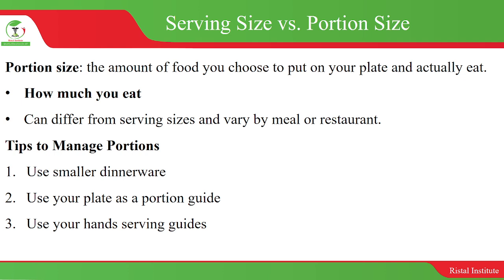Portion size, on the other hand, is the amount of food you choose to put on your plate and actually eat. It can differ from serving sizes and vary by meal or restaurant. So the serving size is the standardized amount determined by the Food and Drug Authority written on food labels, while the portion size is the amount you choose to consume — you could consume 50 grams even if the label says 100 grams, or more or less depending on whether you want to gain or lose weight.